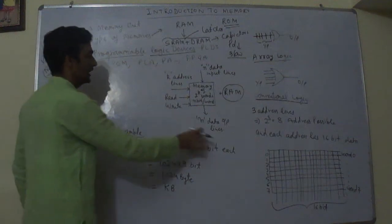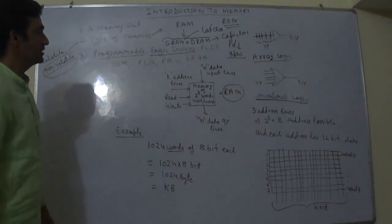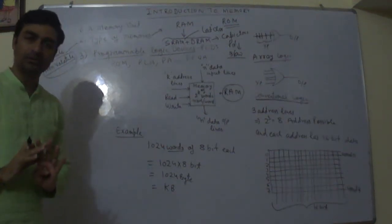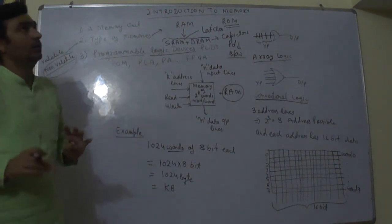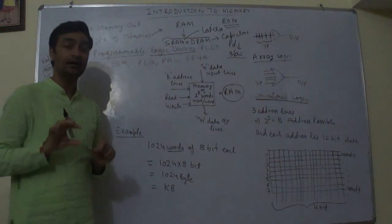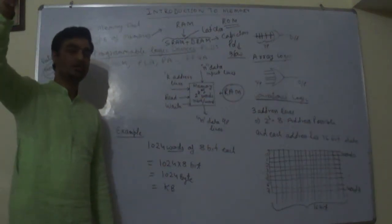Next is RAM. Basic block diagram of RAM or memory. Now in this case, let's talk of number of inputs. Address, then, is number of inputs.